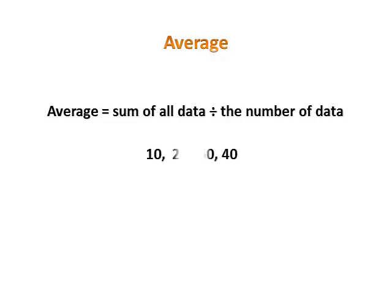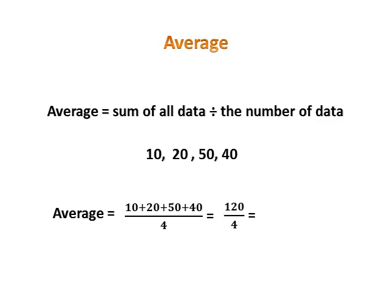So for example, you have these numbers here. You have 10, 20, 50, and 40 and you want to get the average of these numbers. So the average is basically the sum of all the numbers. This is why we have 10 plus 20 plus 50 plus 40 and you divide that by total number of information. In this case you have four numbers. So you add that and you have 120 divided by four and so that's 30.